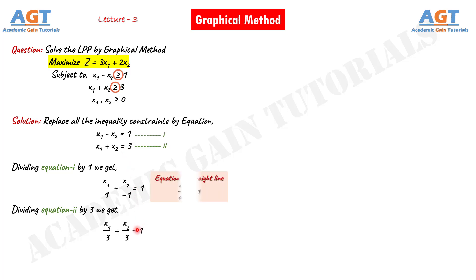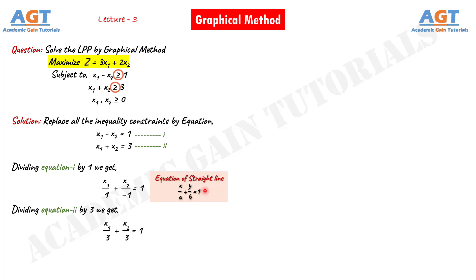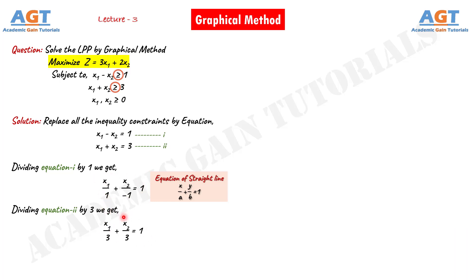Now, we know that the equation for a straight line is x divided by a plus y divided by b equals 1, where a is the intercept of the x-axis and b is the intercept of the y-axis. If we compare this straight line equation to our two equations, we can see the same format. In equation 1, 1 is the intercept of x1 and minus 1 is the intercept of x2, so this is a straight line equation. Similarly, the other equation is also a straight line equation. Now we will plot these two straight line equations on a graph.